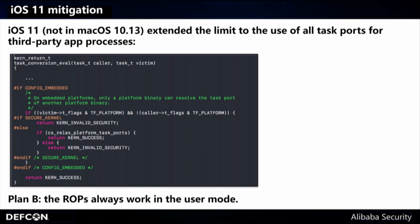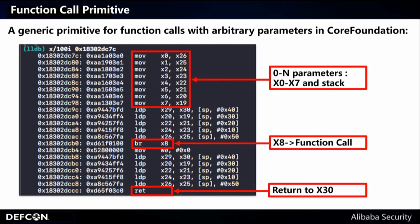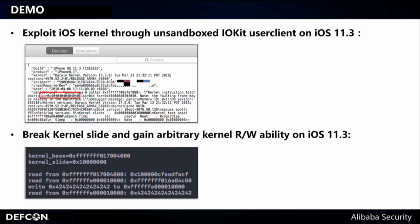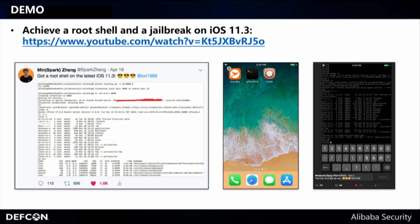However, iOS 11 added a new mitigation so that we cannot easily use the task port in user land. But we have a Plan B: ROP always works in user mode. We can use a generic primitive for function calls with arbitrary parameters in CoreFoundation. This gadget is very useful because we can have unlimited parameters, call x8, and then return to the program. By using the BluetoothD vulnerability, we successfully exploited the iOS kernel through our unsandboxed IOKit user client, broke the kernel slide, and gained kernel read and write ability on iOS 11. We also got a root shell and a jailbreak on iOS 11.